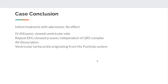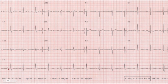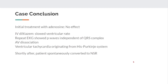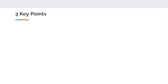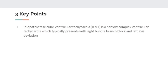Following that, she spontaneously converted to normal sinus rhythm. On that EKG you now see P-QRS-T; she's in sinus rhythm with a somewhat unusual-looking EKG but generally not a problem from an ED standpoint. She was admitted to the hospital on telemetry and had an echocardiogram which showed a normal LV and EF. Cardiology started her on flecainide and metoprolol, and she was discharged the following day.